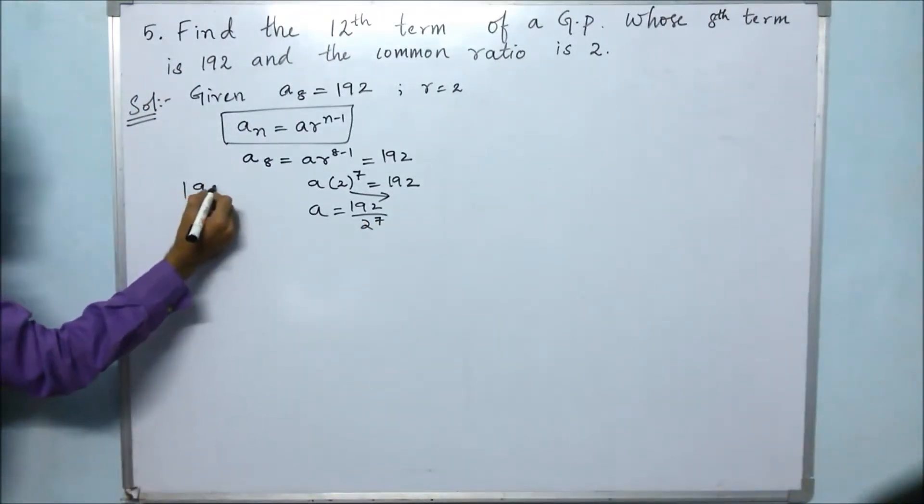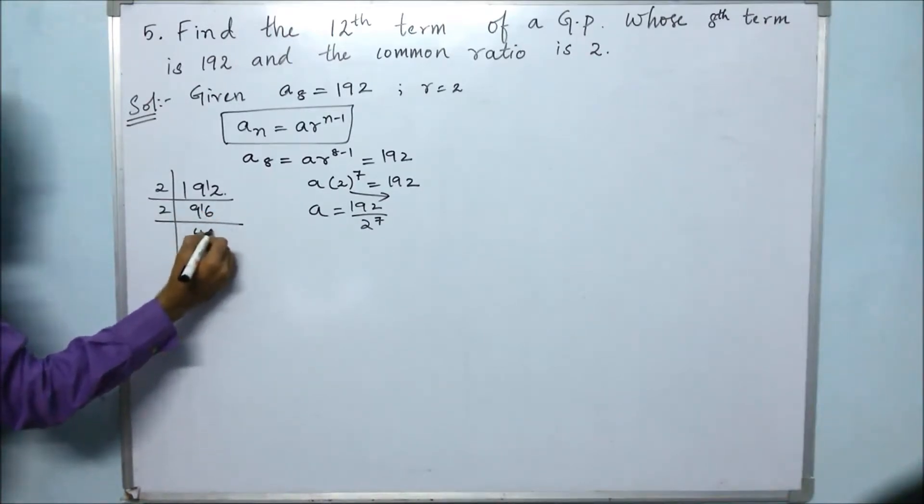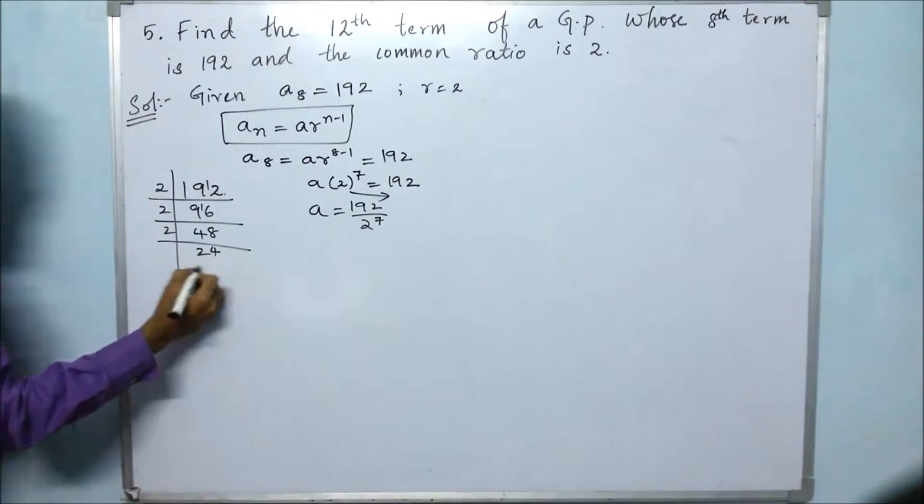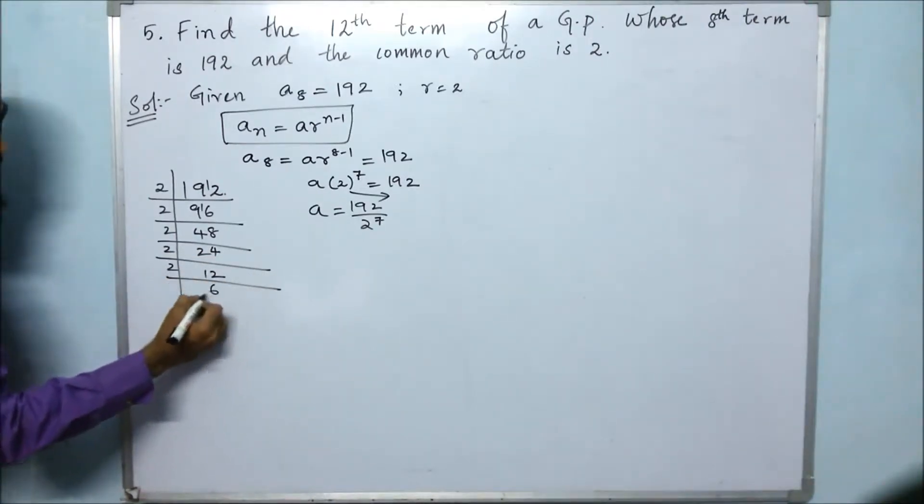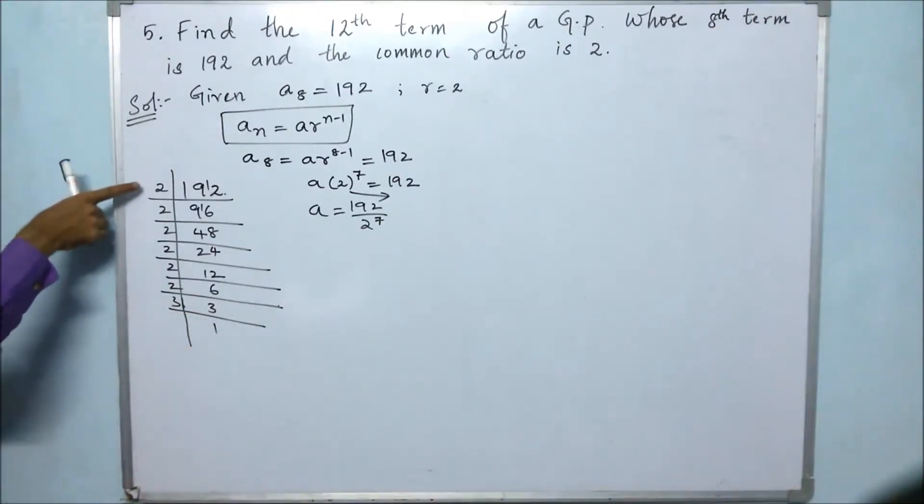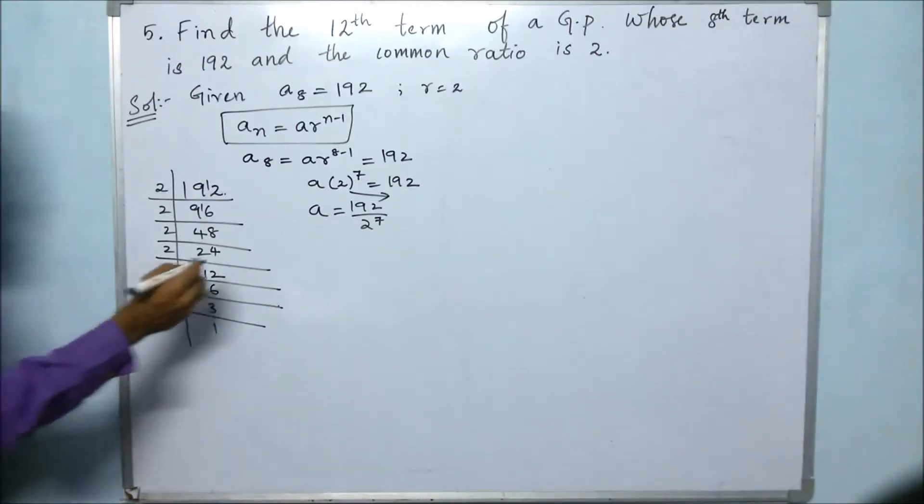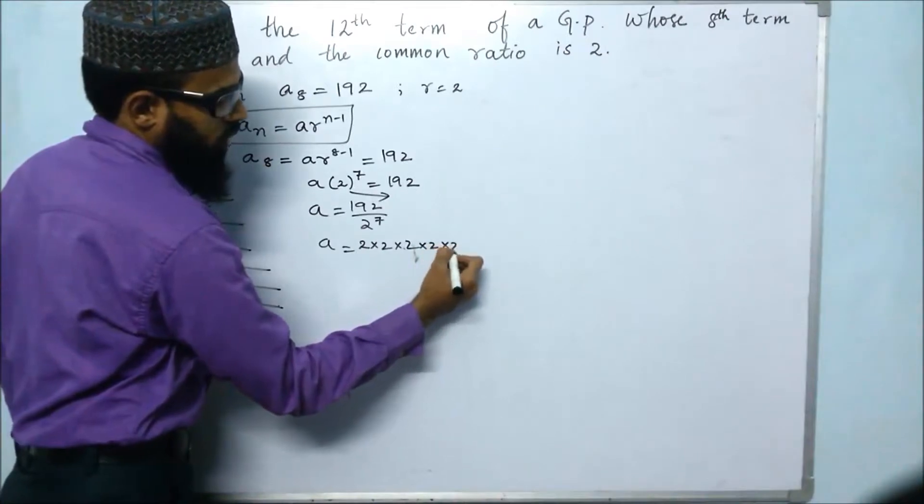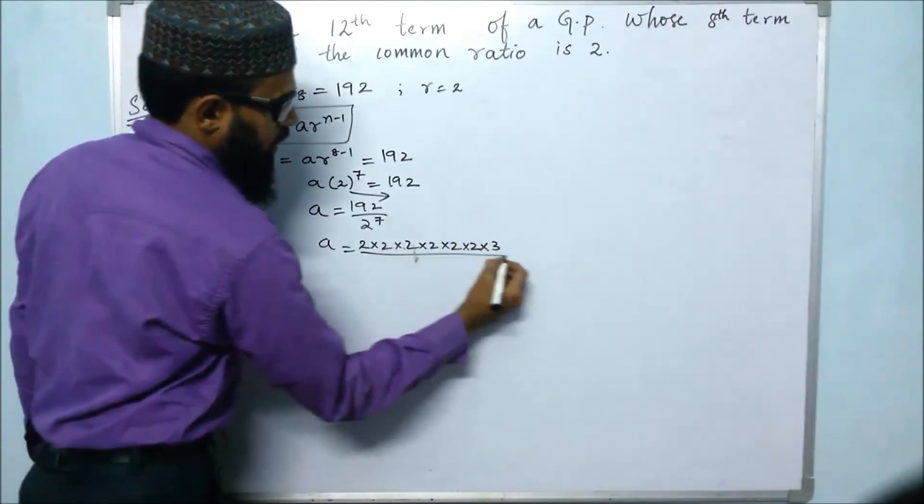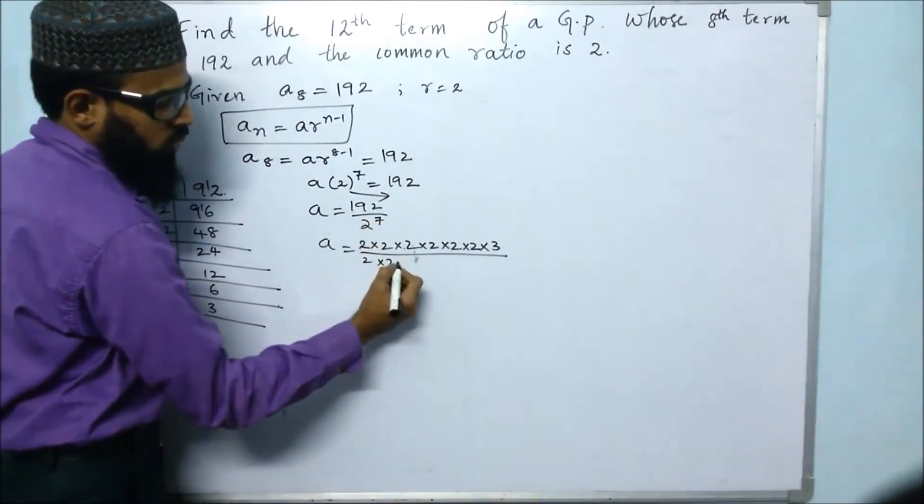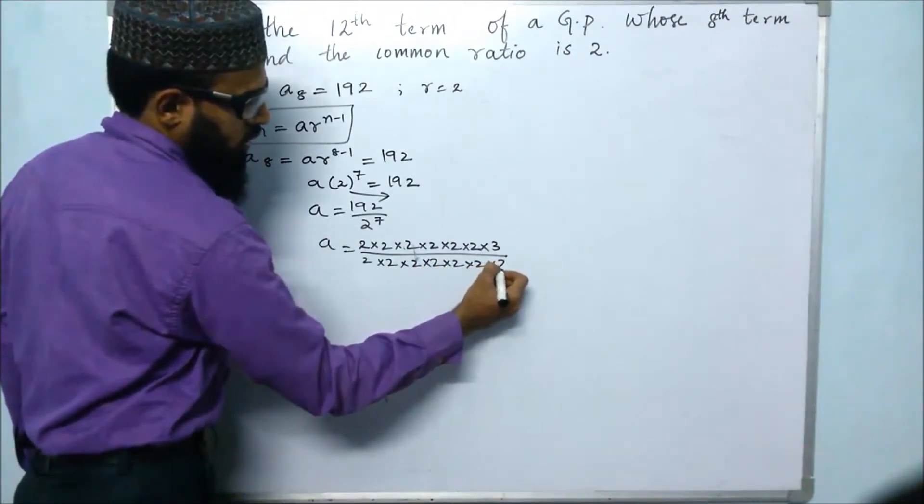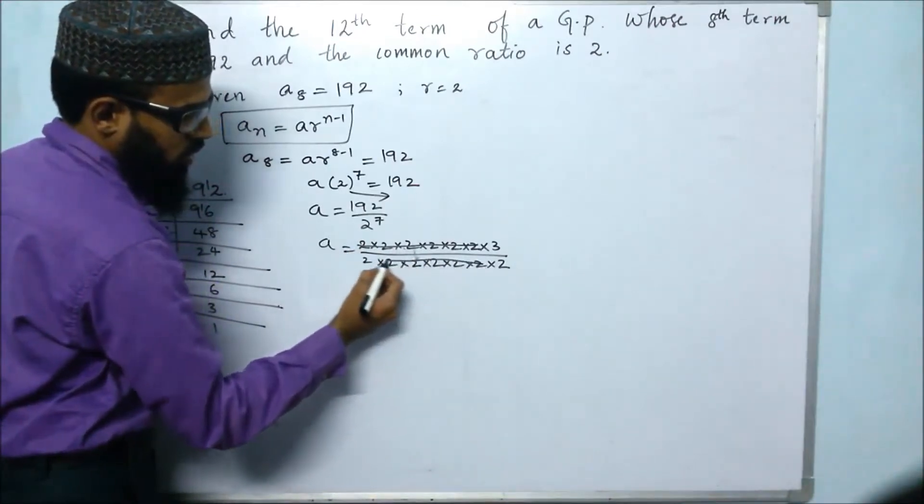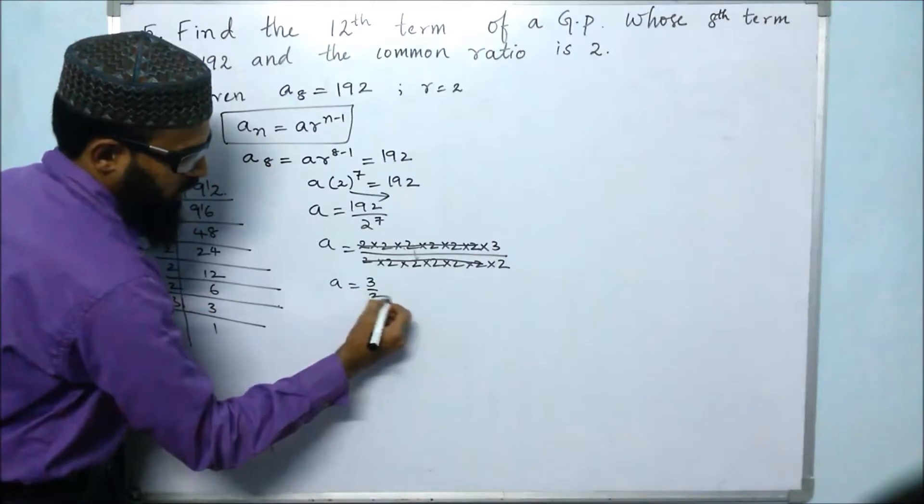If we take out the factors of 192, we will get 2×96, 2×48, 2×24, 2×12, 2×6, 2×3, and finally 3. So 192 equals 2 to the power of 6 times 3. We have 7 twos in the denominator and 6 twos times 3 in the numerator. This will get cancelled. So the value of a is 3 divided by 2.